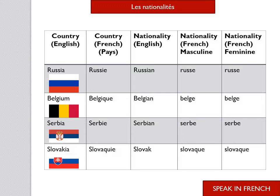Next is Slovakia — in French, we say Slovaquie. The nationality in English is Slovak, and in French the masculine nationality is slovaque. As we have learned, if a nationality already ends in 'e', it will not change in the feminine form either — slovaque / slovaque.